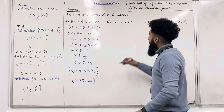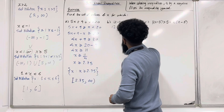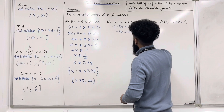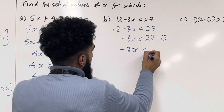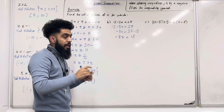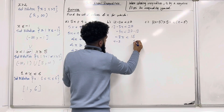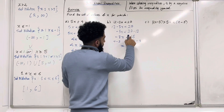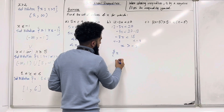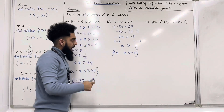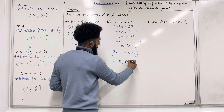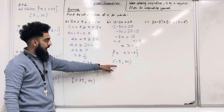Moving on to part B. We have minus 3X is less than 27 minus 12, so minus 3X is less than 15. Now we divide both sides by negative 3, which flips the inequality, giving X is greater than 15 divided by negative 3, which is minus 5. In set notation: the set of values of X such that X is greater than minus 5. The interval notation is: curly bracket, minus 5 comma infinity, close curly bracket.